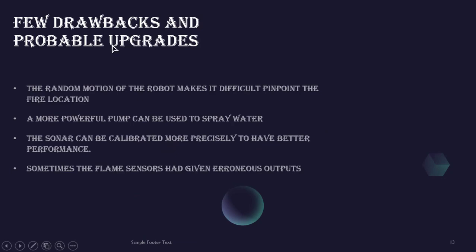Here are a few drawbacks and probable upgrades. The random motion of the robot makes it difficult to pinpoint the exact fire location. The pump we used were not as powerful as we desired, so a more powerful pump can be used to spray water effectively. The sonar can be calibrated more precisely to have better performance. And the flame sensors we use, sometimes they had given erroneous errors.